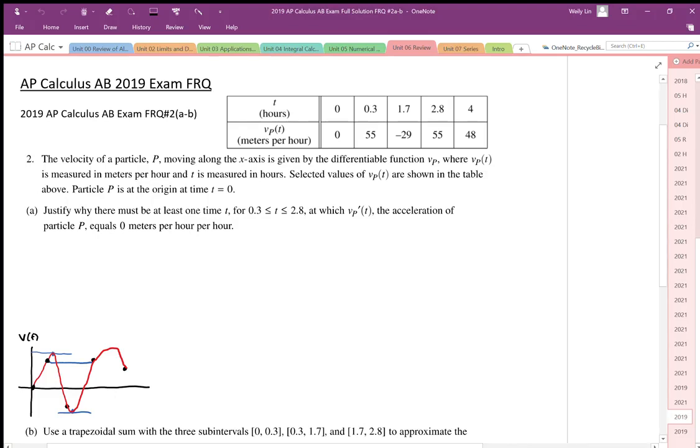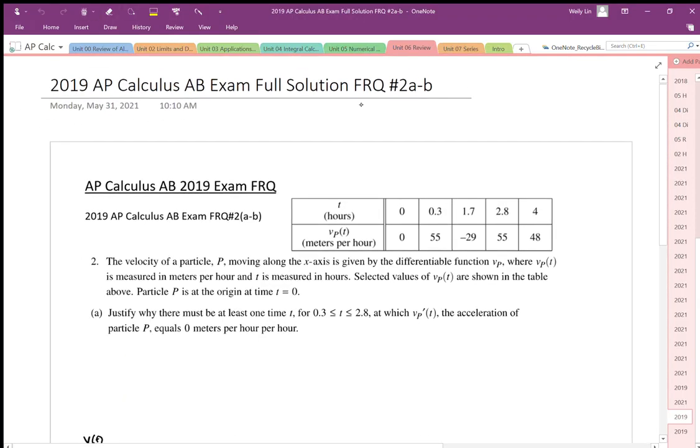Part A says justify why there must be at least one time in the interval from 0.3 to 2.8—I'm just going to highlight that interval—where the acceleration is equal to zero meters per hour per hour.